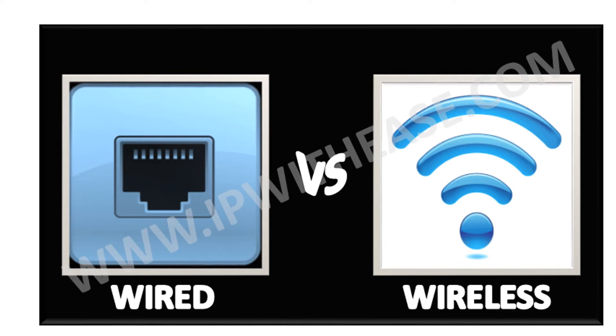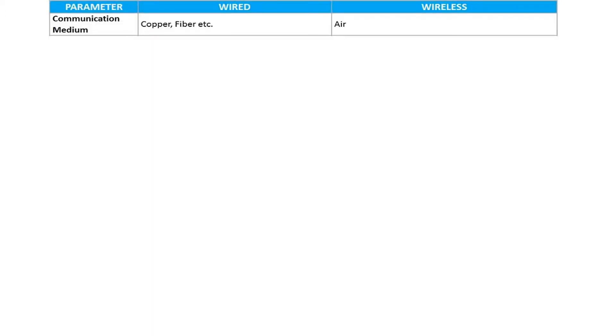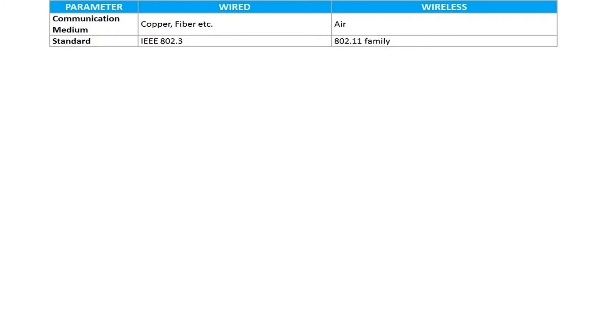Now that we have a high-level understanding of wired and wireless networks, let's start with their differences. First is the communication medium. A wired network includes copper or fiber as its communication medium. Copper can be Cat5, Cat5e, Cat6, or even Cat7, while fiber can be single mode or multimode fiber. On the other hand, the communication medium for wireless network is air, with a frequency range of 300MHz to 3GHz.